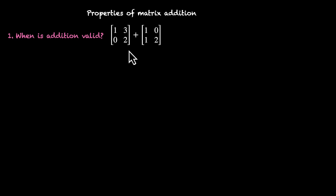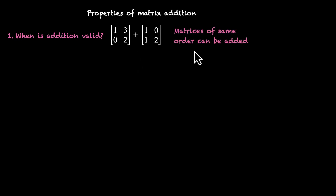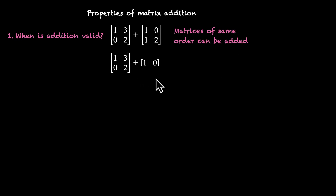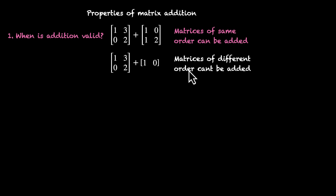For this matrix, the order is two by two — we have two rows and two columns. You can add any two by two matrix with this, but you cannot add any other matrix which has a different order. So this is valid because these are two by two matrices of the same order, but this is not valid — you cannot add a matrix with one of a different order.